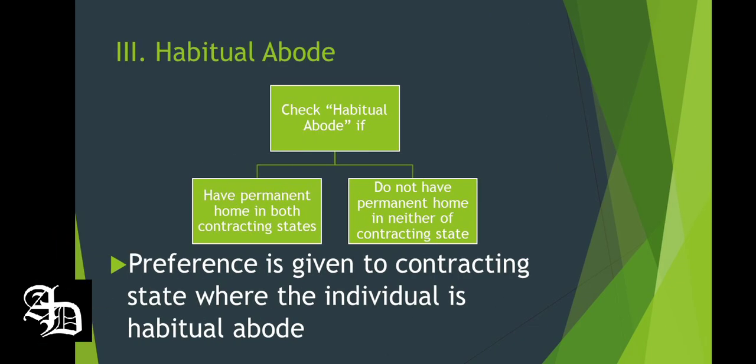The case where the individual has a permanent home in both contracting states and it is not possible to determine in which state his centre of vital interests lies, and the case where the individual has a permanent home in neither contracting state — in these scenarios, preference is given to the contracting state where the individual has a habitual abode.